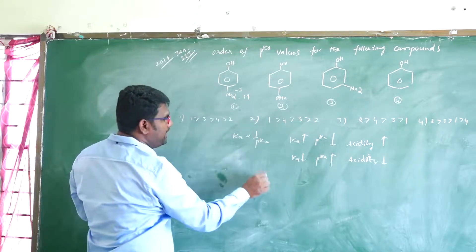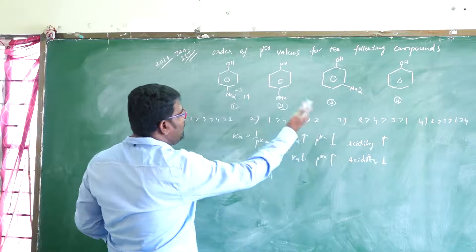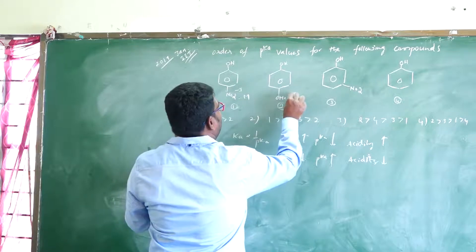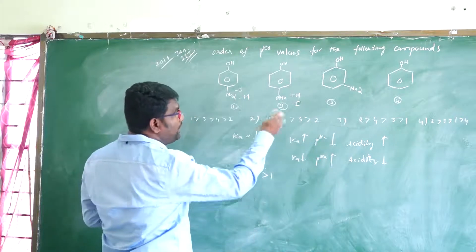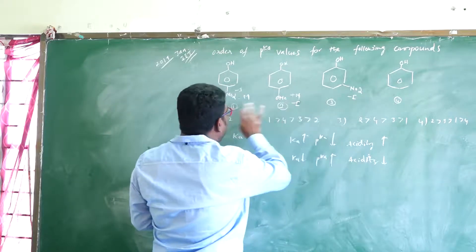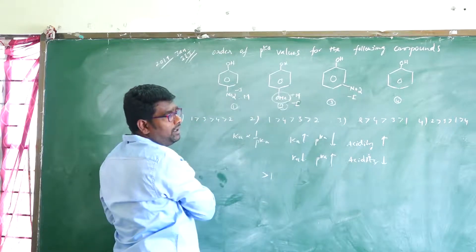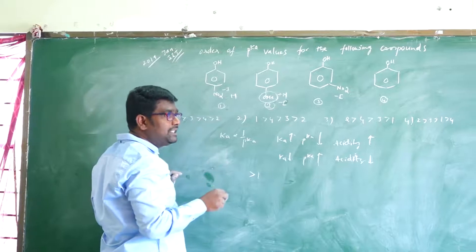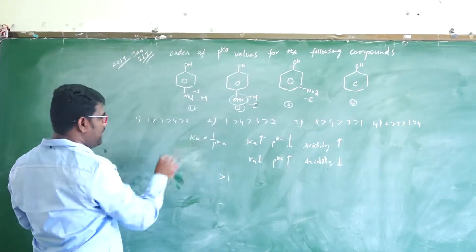Among the four, which one has the most acidity? That one has the least PKA value. Now, which one has the least acidity? These compounds have electron-releasing groups with +M effect or -I effect. Compared to the others, some have only -I effect. The one with electron-releasing groups has the least acidity, because electron-releasing groups decrease acidity, and decreased acidity means a higher PKA value.